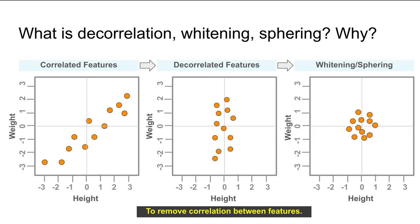So what is whitening or sphering, and what is correlation and why is it used? Let's imagine we have a dataset as shown in the left-hand figure, where we have height and weight. The orange dots represent the data points, and as you can see, as the height increases the weight also increases — that tells us those two features are correlated. In machine learning, when we are training a model, we want to remove such collinearity within features.